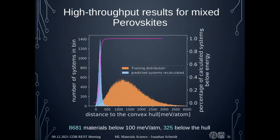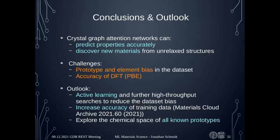We performed a high-throughput search for mixed perovskites and it was quite successful — we found quite a few stable materials and quite a few that are very close to the hull, which can probably be further stabilized with some distortions. To summarize: crystal graph attention networks can really accurately discover new materials from unrelaxed structures and predict other properties accurately as well, which we have already tested but haven't published yet.